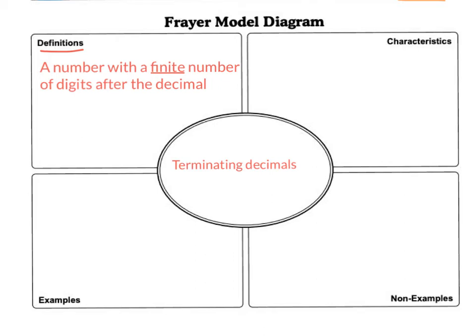So go ahead and record that definition into your notes on your Frayer model. Hit pause if you need to. And moving on to characteristics.